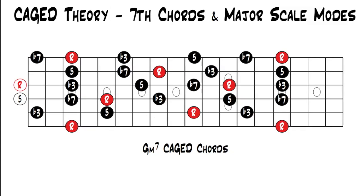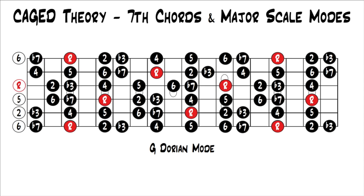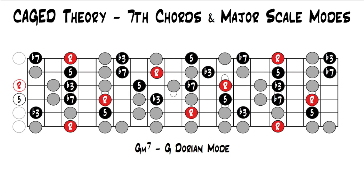Now we're on to the minor seven. Minor seven works with all the minor modes — three minor modes that these minor seven chords will work with. On your screen right now, in the key of G, we have G minor seven cage chords up and down the whole fretboard. The Dorian mode works with those chords. This is the G Dorian mode. If I highlight the G minor seven cage chords and then show the rest of the scale in gray, you can see how the minor seven chord fits within that mode — giving you options for a minor seven chord plus extra notes for licks or fills.